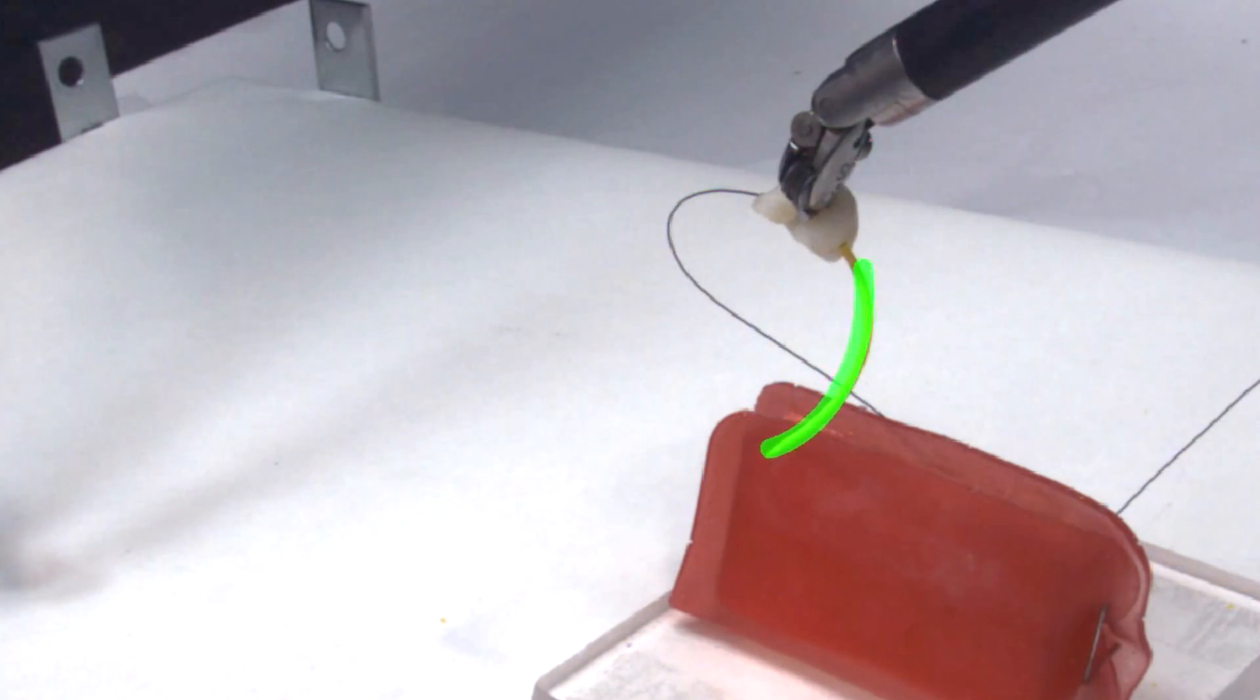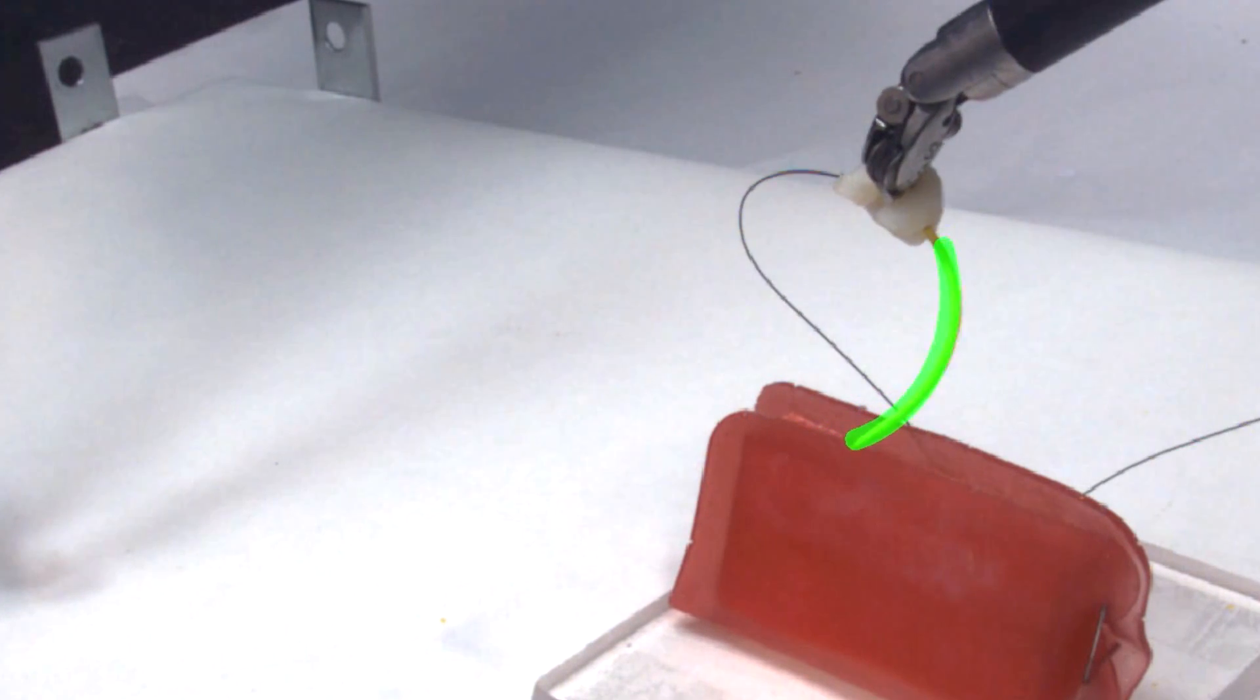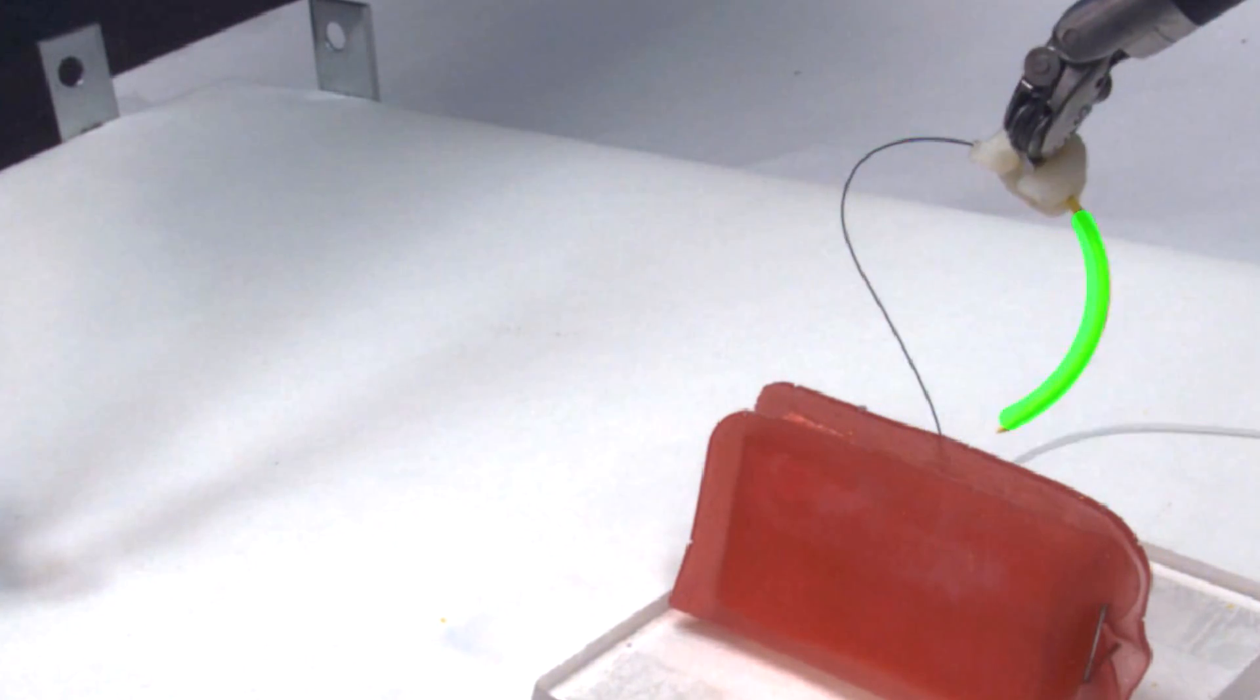Together, the needle guide along with the needle tracking system reduces needle position uncertainty to approximately 2mm.